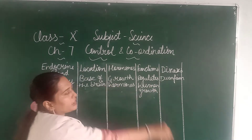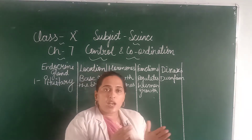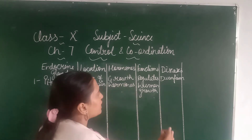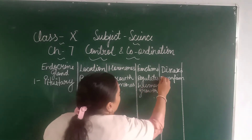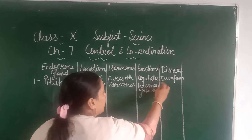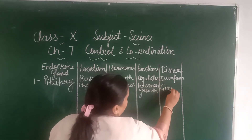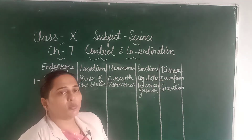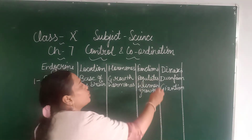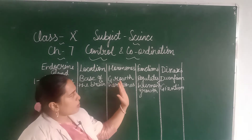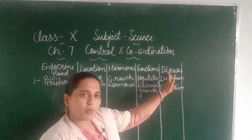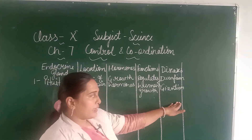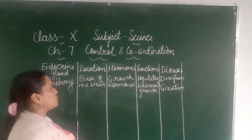If growth hormone is secreted in a large amount, the person becomes too tall — their height increases excessively. That condition is known as giantism. So there are two diseases related to growth hormone secretion: if secreted in less amount — dwarfism; if secreted in large amount — giantism.